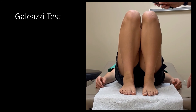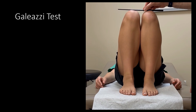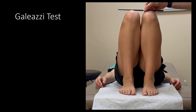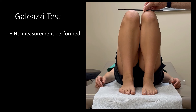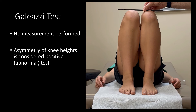The test is positive if the knees are not level and may suggest hip dysplasia. Note that there is no measurement performed here. If there is asymmetry in knee heights, it is considered positive and abnormal, and deserving of further evaluation in the context of the entire history and physical exam.